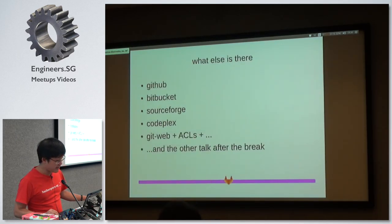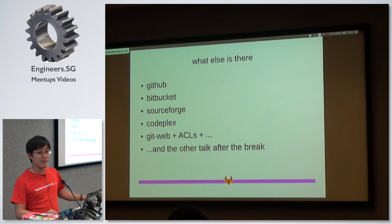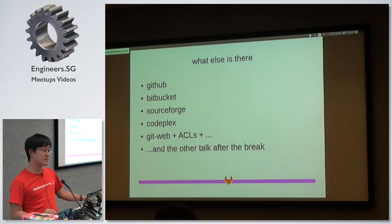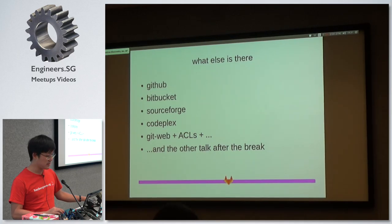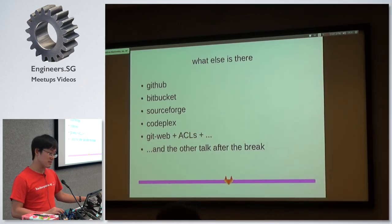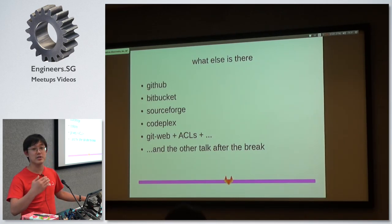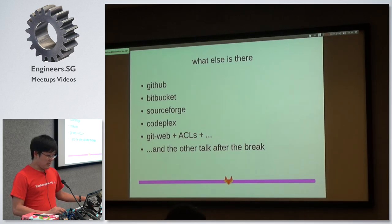Why not other things? GitHub — we've looked at that briefly — because it's public and we don't want to put code there. Same for Bitbucket. SourceForge was just too old. There's Gitorious, but it got acquired by GitLab along the way. CodePlex — does anyone use CodePlex? And then there's the DIY solution where you have GitLab to visualize your repo and use file system permissions to control who can get to what. If you have time, or think you have time, you can get into that.